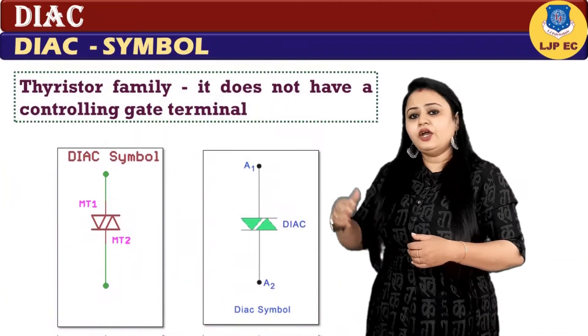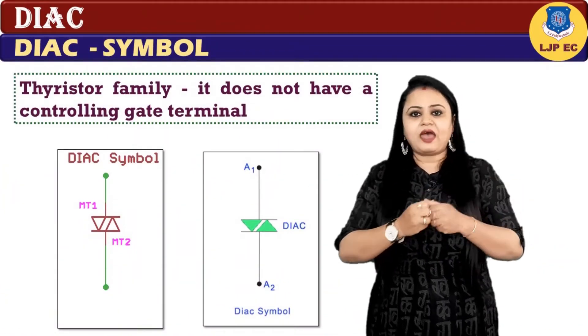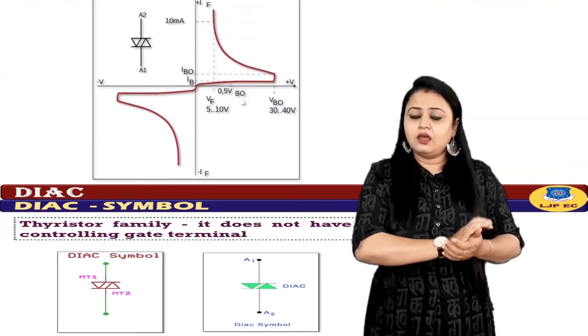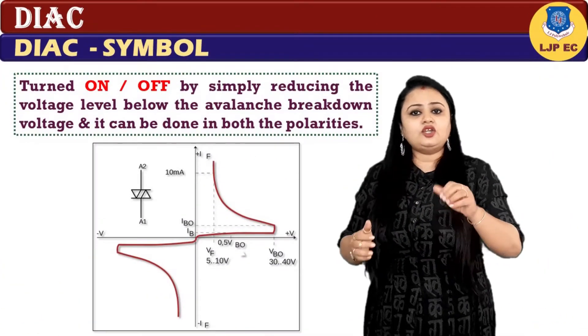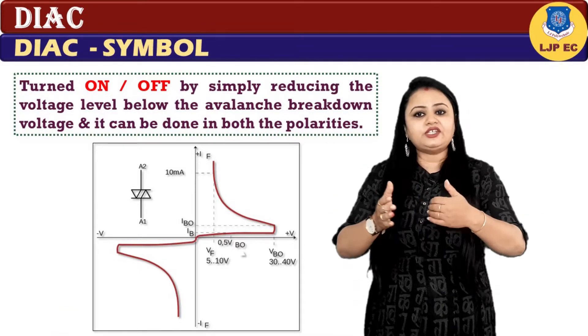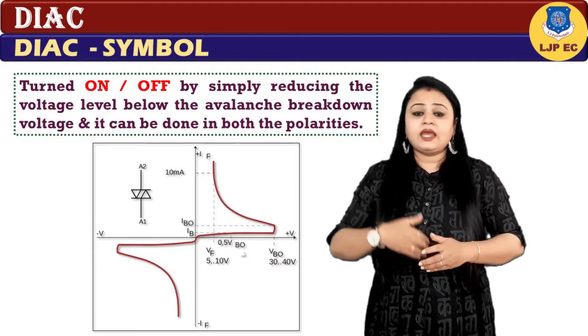Hence, the pinouts of DIAC are reversible, just like a resistor or capacitor. You could have noticed, although it belongs to the thyristor family, it does not have a controlling gate terminal because they can be turned on or off by simply reducing the voltage level below the avalanche breakdown voltage, and it can be used in both polarities.